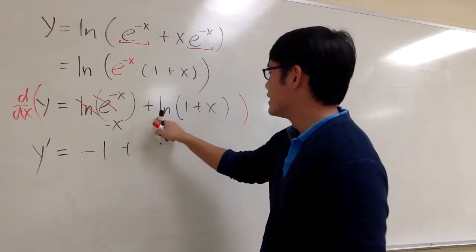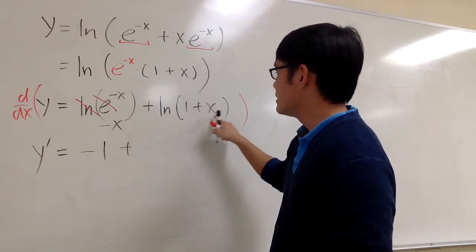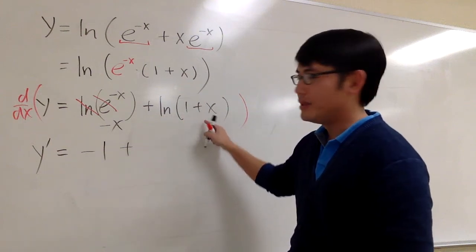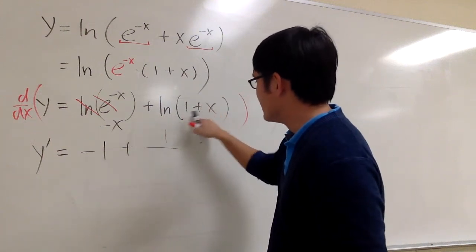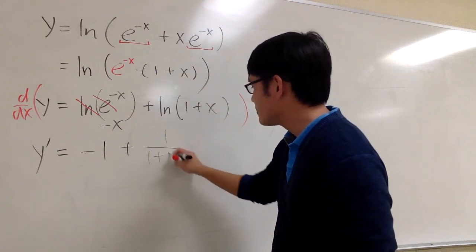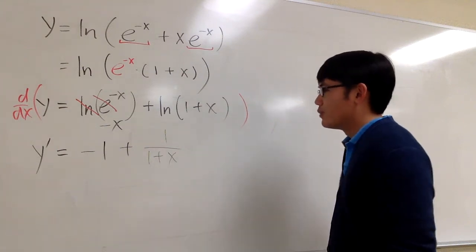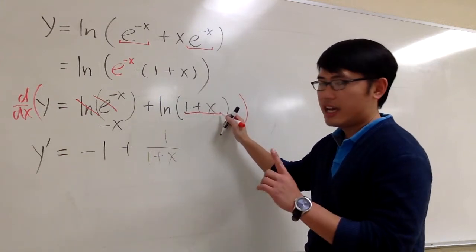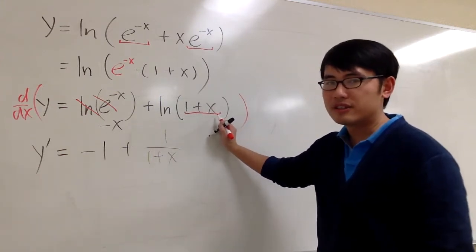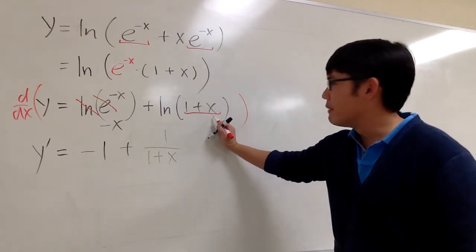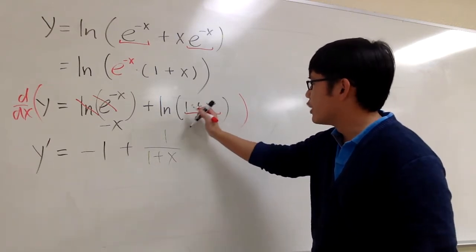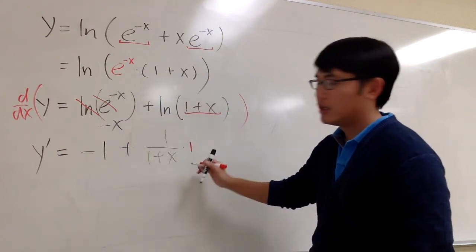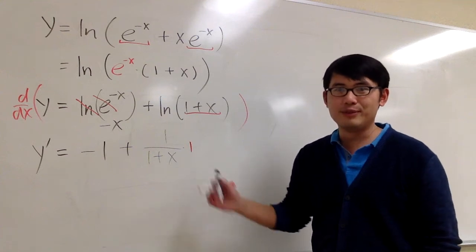And then I'm going to add the derivative of ln of one plus x. Derivative of ln of something is 1 over the same thing inside. So let me put this down, just like that. 1 over 1 plus x. And then you look inside. You should always check to see if the chain rule matters. You always multiply by the chain rule, but the derivative inside: derivative of 1 is 0, derivative of x is 1. So technically you'll have to multiply by 1, but it doesn't really matter.